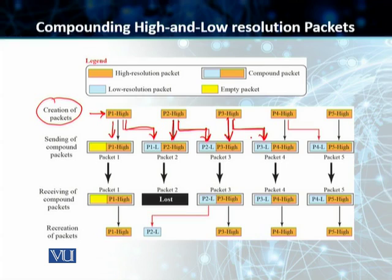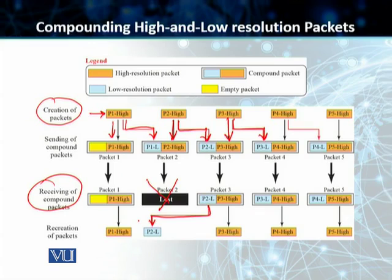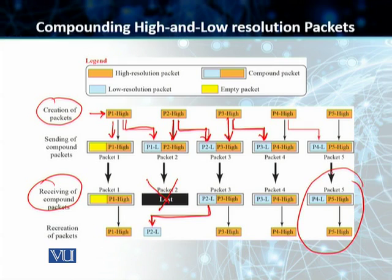In this case, if on the receiving end our packet number 2 is lost, we still have a low resolution version of that packet sitting in packet number 3, and we can use that to recover or recreate packet number 2 at runtime. In this method, if the last packet is lost, because we don't have a packet number 6 containing its low-res copy, there is no way packet number 5 can be recovered. But given that it is not the last one, we can recover all the other packets that make up our transmission.